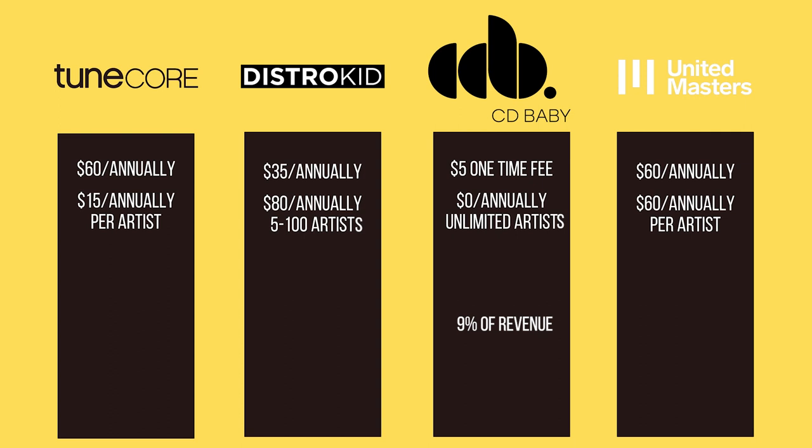DistroKid starts their label plans at five artists, so let's examine the cost of each distributor assuming you had five artists on your roster. For TuneCore, that price would be $135 a year. For DistroKid, it would be $115 a year.